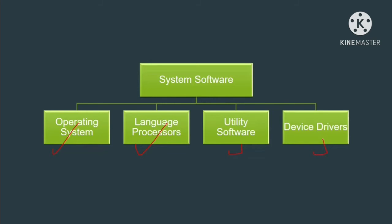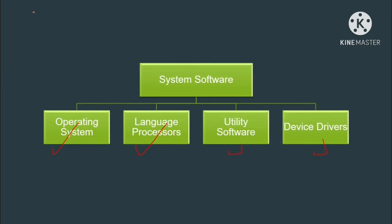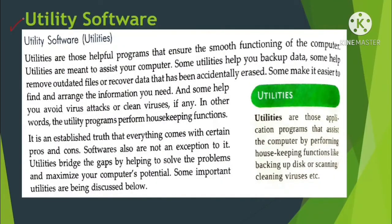Utility software — generally whenever we use a computer, most of us are using only the operating system or application software. But there are some other software which are required in a computer to maintain the smooth functioning of computer software or computer hardware. Utilities are those helpful programs that ensure the smooth functioning of the computer system. These programs will not only work for you but also maintain the smooth running of your device. The term utility is meant to assist your computer.